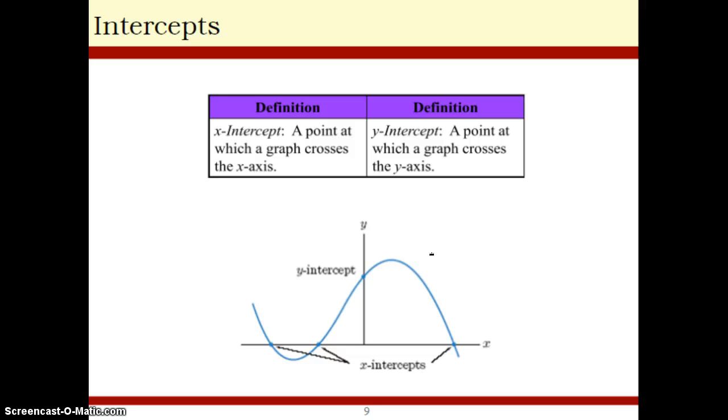Intercepts, something you should already know about. It's where the graph crosses the x-axis, where the graph crosses the y-axis. To find the x-intercept, you set y equal to 0. To find the y-intercept, you set x equal to 0. Set y equal to 0 and solve for x. Here, you set x equal to 0 and solve for y. Hopefully, that should be pretty straightforward.